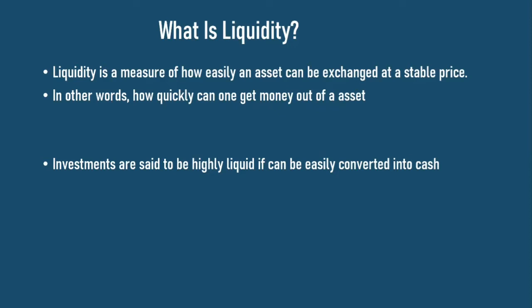Investments are said to be highly liquid if they can be easily converted into cash. We have different types of asset classes: property, the stock market, the crypto market, and businesses in the form of equities. These asset classes differ in the level of liquidity. Stocks are considered to be highly liquid compared to property, because if you were to sell both assets at the same time, you're most likely going to get your money faster with stocks.